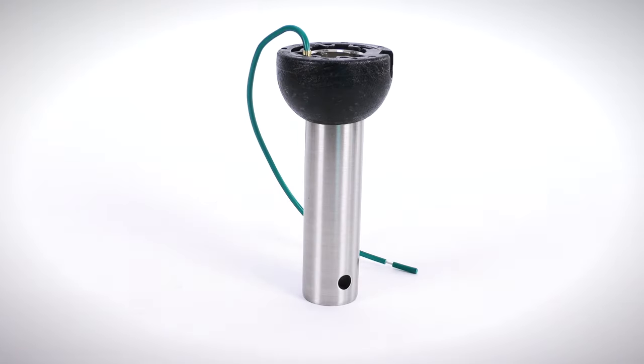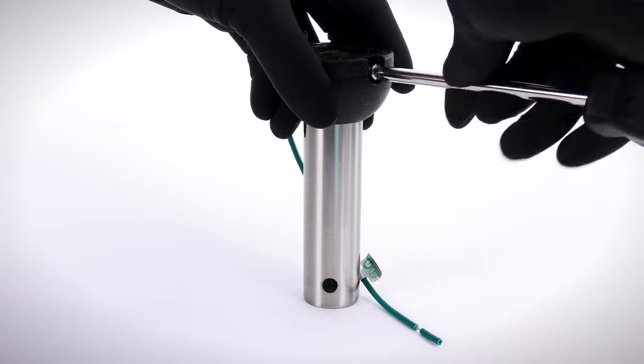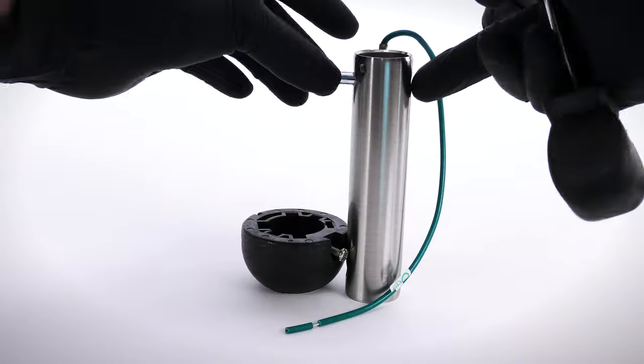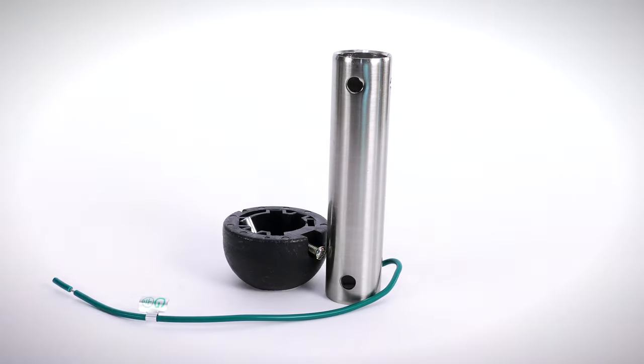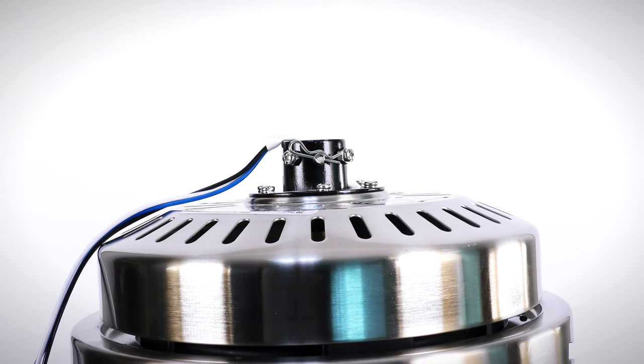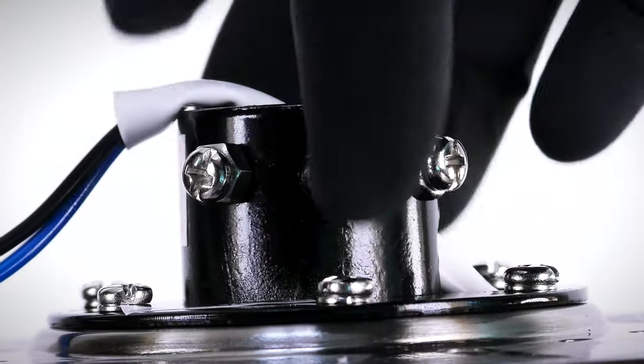On the hanger ball downrod assembly, loosen the set screw and lower the ball off the downrod. Remove the cross pin and the ground lead. On the fan motor assembly, remove the clevis pin and cotter pin.